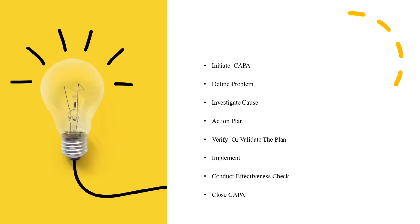In simple terms, the steps in CAPA are: initiate corrective and preventive action, define the problem, use suitable approaches to investigate the cause and design an action plan, verify or validate the plan, implement the action plan, conduct an effectiveness check for the implemented plan, and close the corrective and preventive action. Every department concerned must be careful and every person's support is needed, as CAPA is an important part of the pharmaceutical quality system.